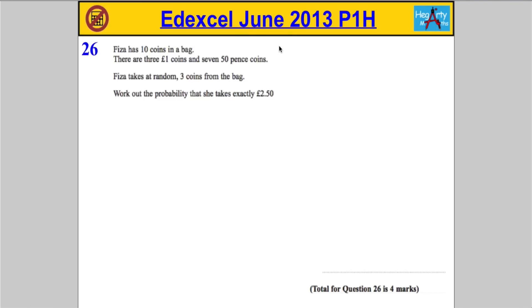Question 26. Visa has 10 coins in a bag. There are 3 one pound coins and 7 fifty pence coins. Visa takes at random 3 coins from the bag and we're asked to work out the probability that she takes exactly £2.50.